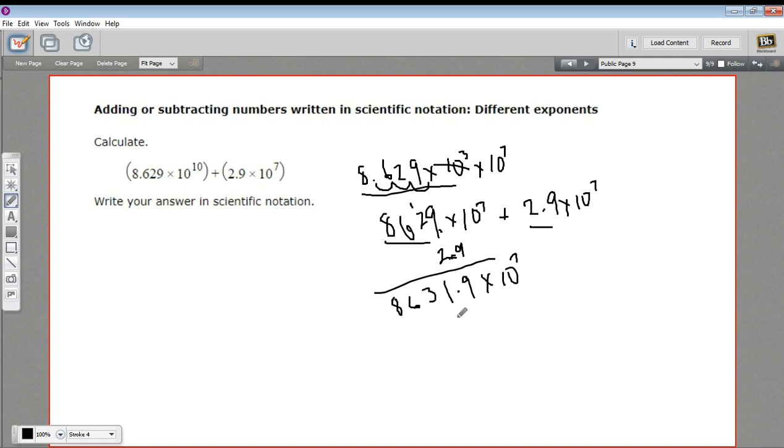Now I think in Aleks, this is an acceptable answer. Some teachers might want you always to move the decimal point so that it's just got one digit to the left of it. If we did that, we'd move it three spaces. So this would be actually 8.6319 times 10 to the tenth.